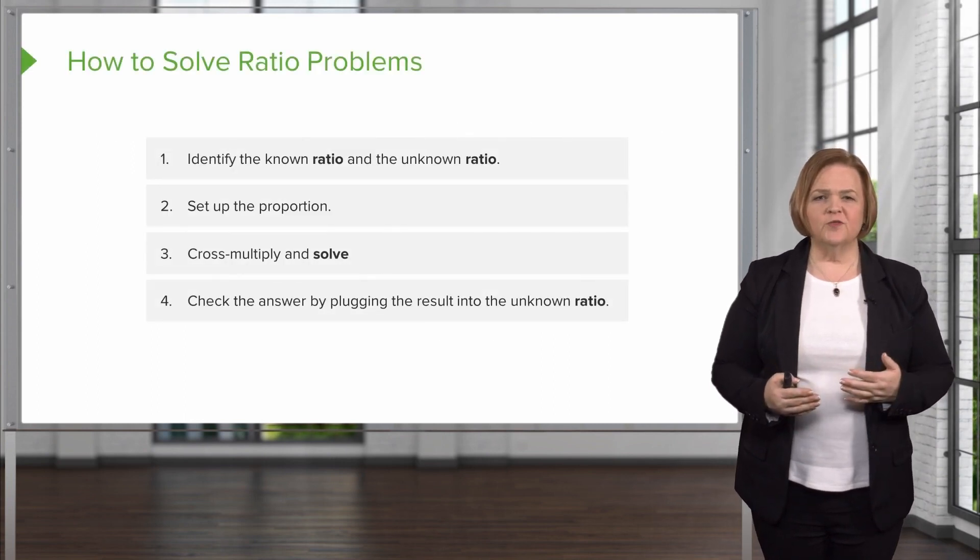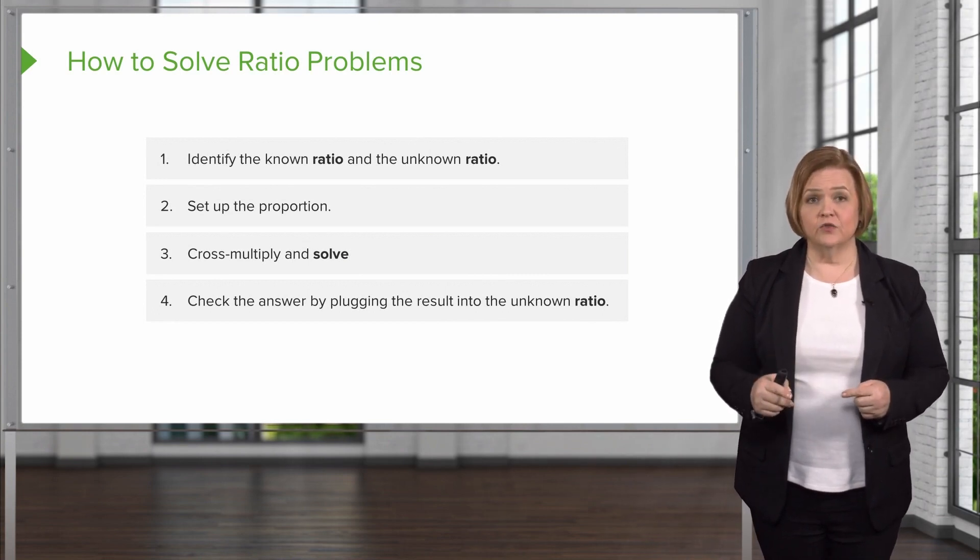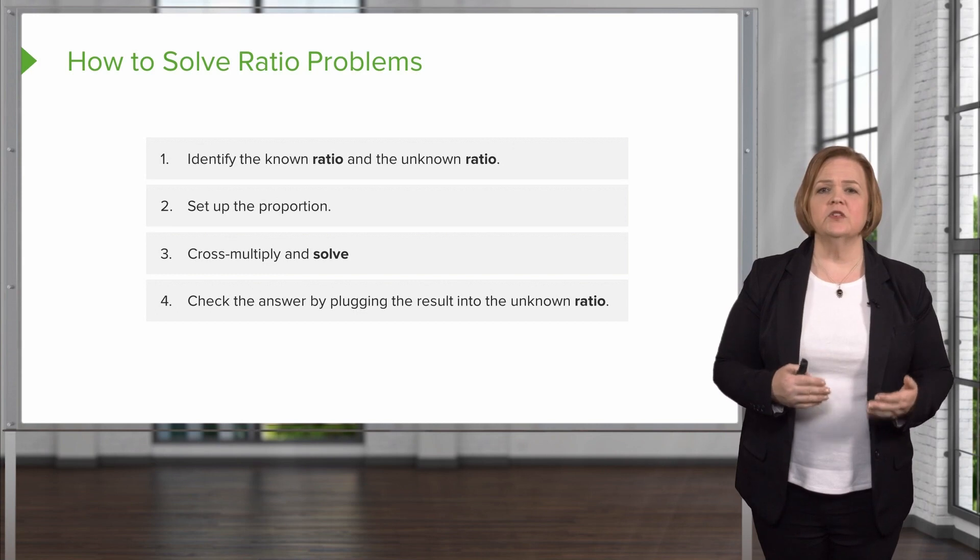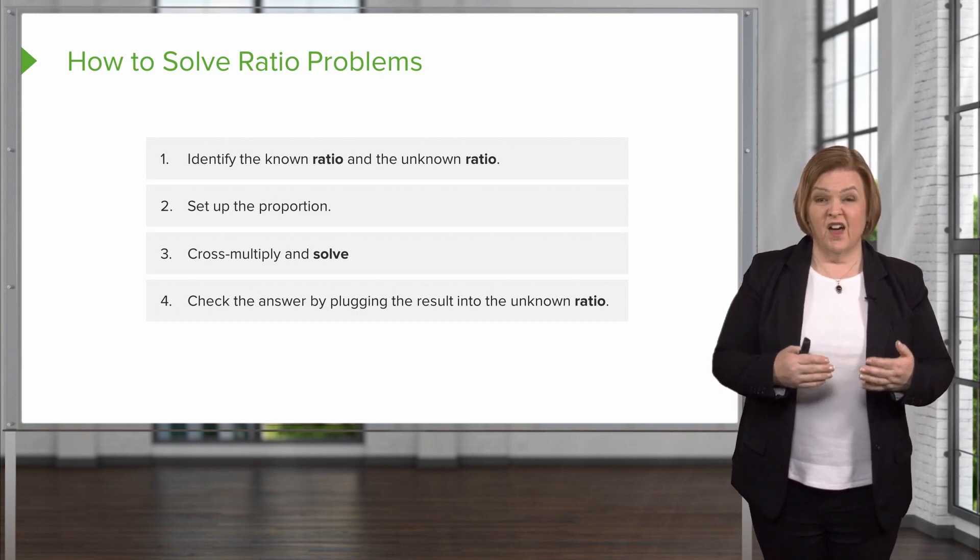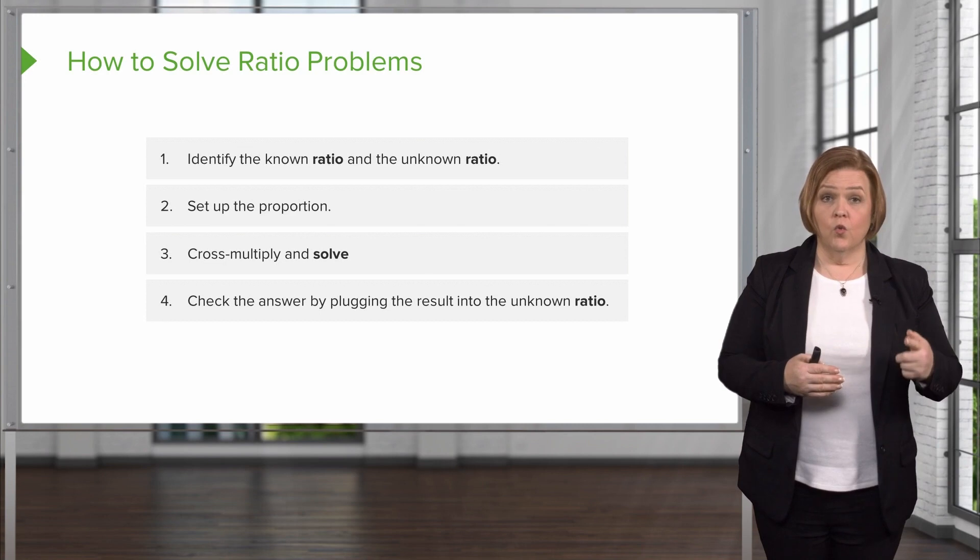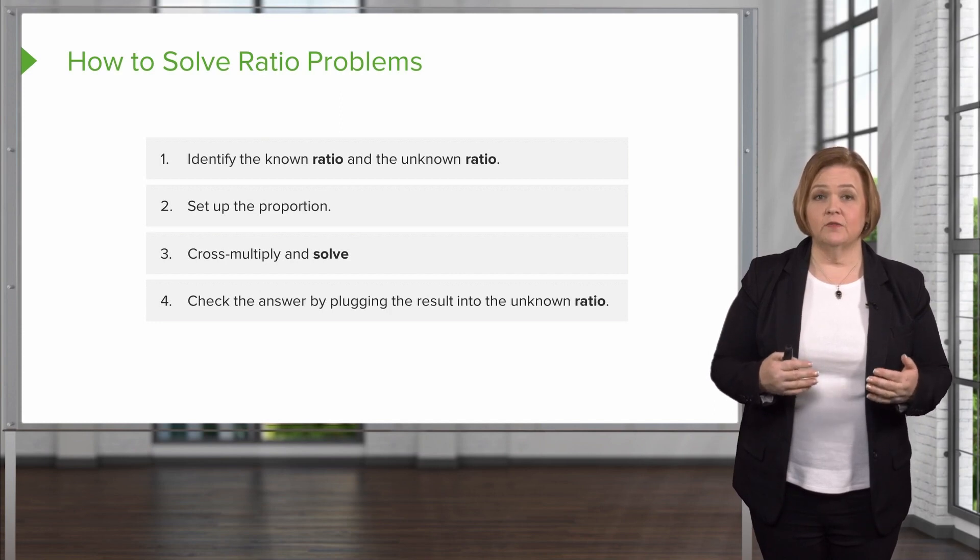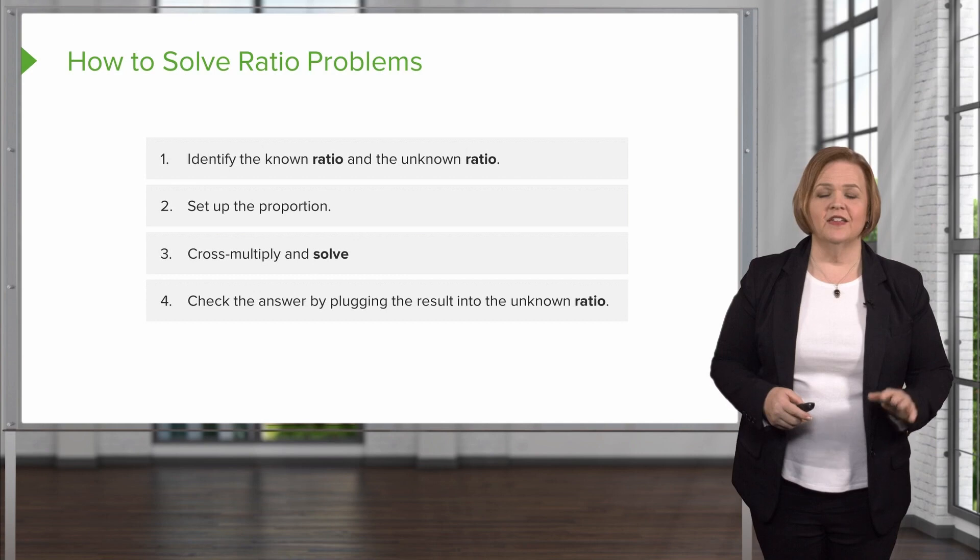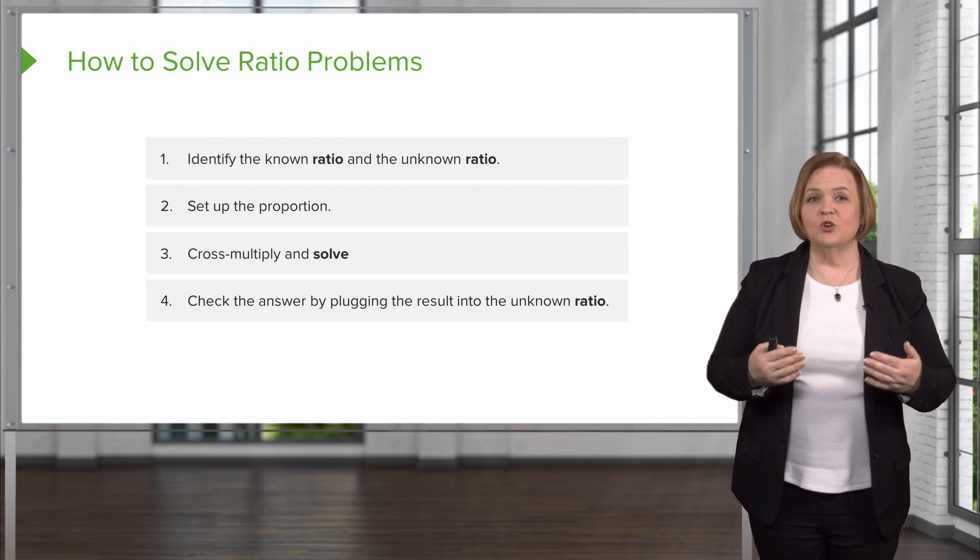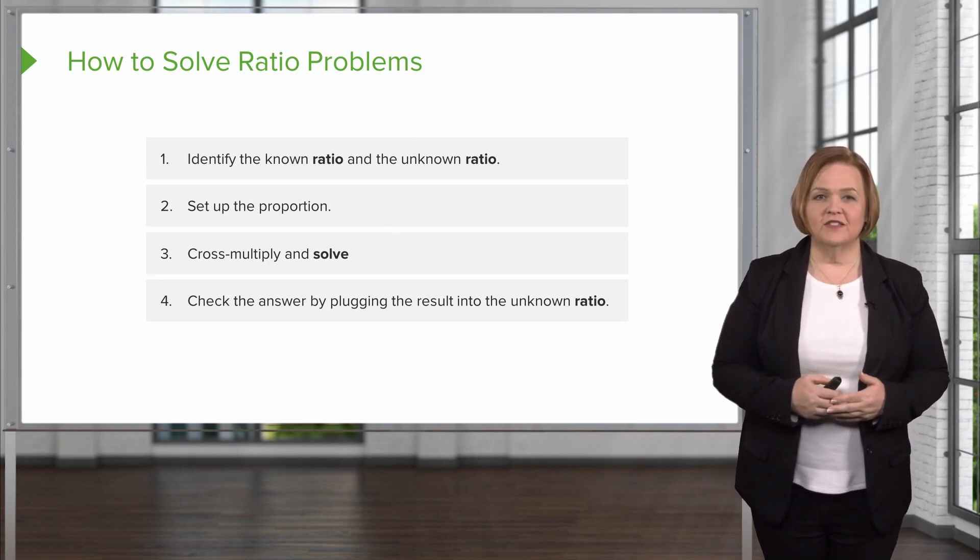So how do you solve ratio problems? Well, hopefully these steps look familiar to you. You identify the known ratio and the unknown ratio. You set up the proportions, cross multiply and solve for x, then check the answer by plugging the result into the unknown ratio. Remember, the unknown ratio is the ordered amount by the physician. The known ratio is the medication that we have. One tablet has 500 milligrams. We're going to try and figure out how many tablets it takes to make the unknown ratio, 750 milligrams. Now I know you can probably do that math in your head. But that's why we picked an example like this to show you how and what the process is. So it's not so much can you do the math in your head. I want you to understand the process as we walk through it.